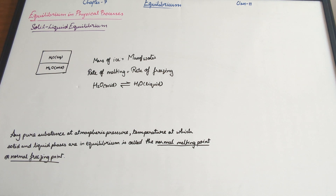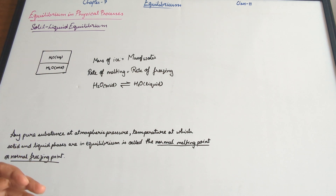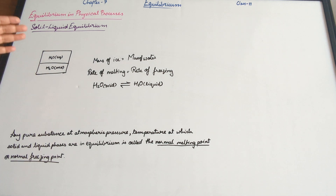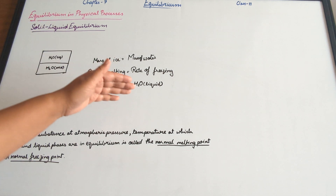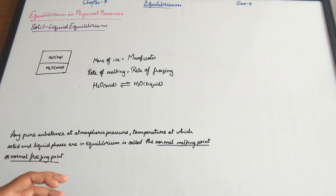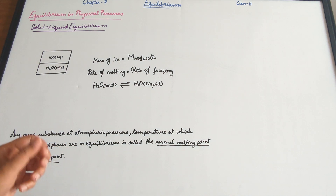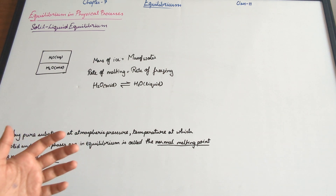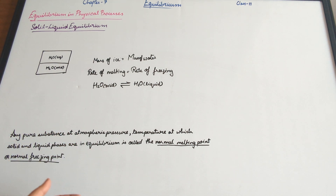The equilibrium state is lost when temperature changes. Similarly, if we decrease the temperature to, say, minus 10 degrees Celsius, then the rate of freezing will be higher than the rate of melting. That is why temperature must stay constant, and we consider 0 degrees Celsius because that is the freezing point of water.